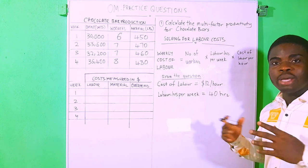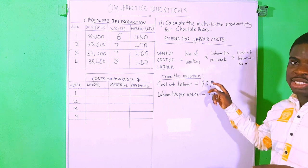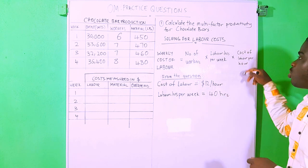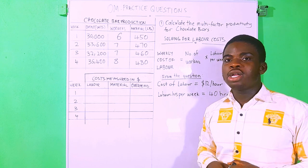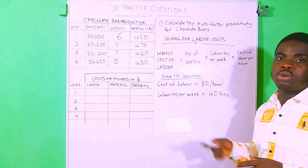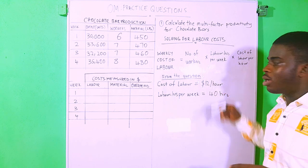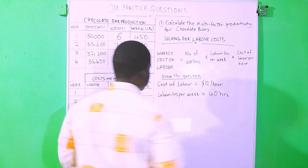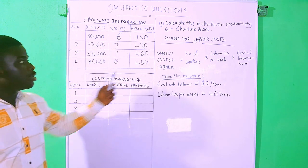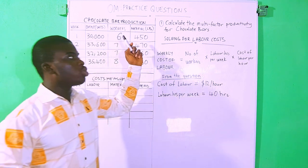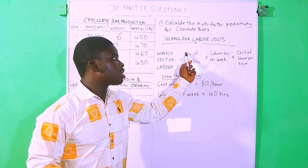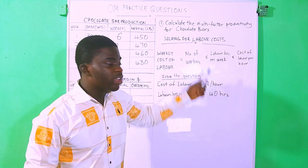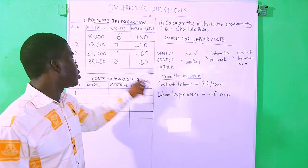Let's start with labor. The formula for solving the labor cost per week is: number of workers for that week times the labor hours per week times the cost of labor per hour. The cost of labor per hour was given as $12 per hour, and the labor hours per week was assumed as 40 hours. For week one, the number of workers was six, so it's going to be six times 40 times 12. For week two it will be seven times 40 times 12, and so on.